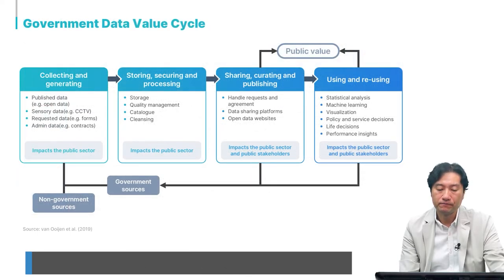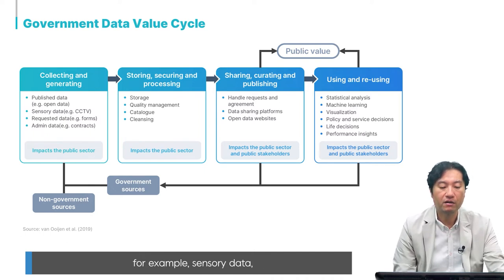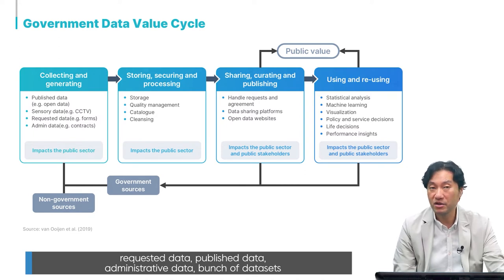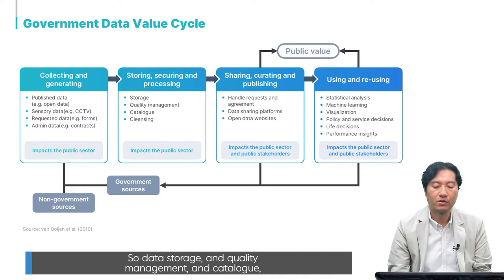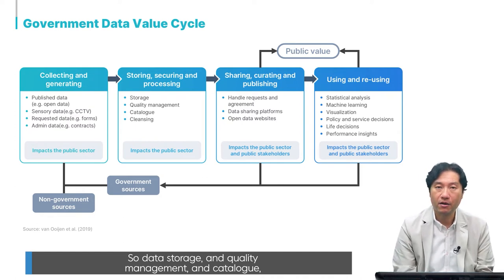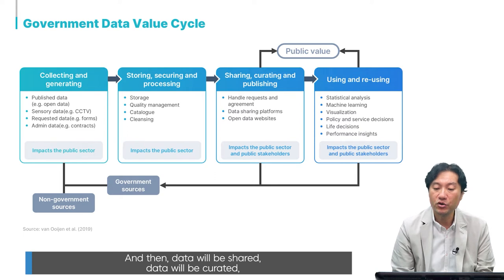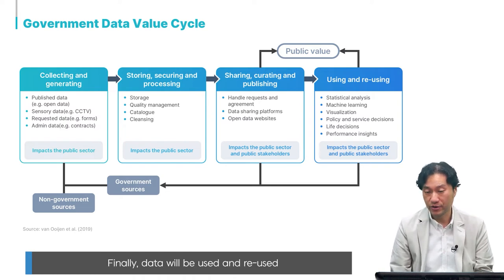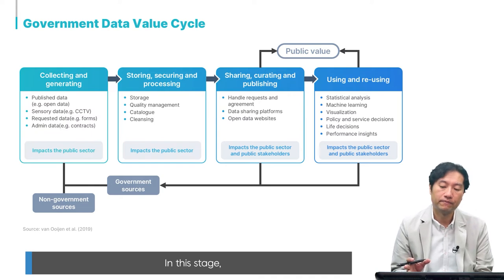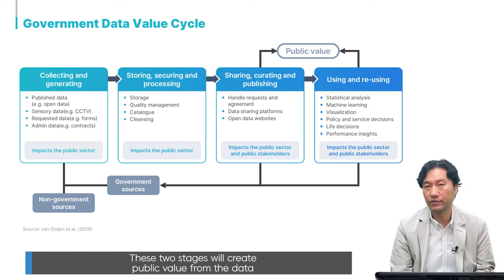The government data value cycle begins with collecting and generating data — sensory data, requested data, published data, administrative data, and more. This data is then stored, secured, and processed through storage, quality management, cataloging, and cleansing. Next, data is shared, curated, and published. Finally, data is used and reused. The sharing and using stages are where data-driven government creates public value.